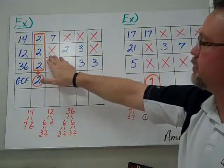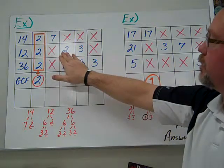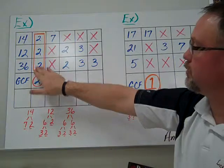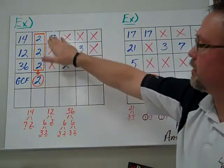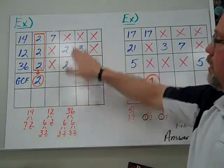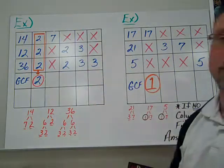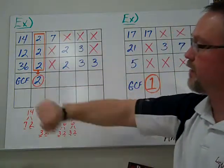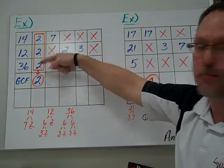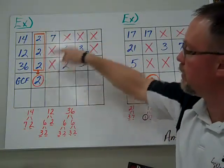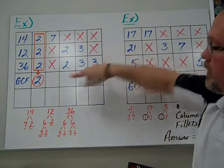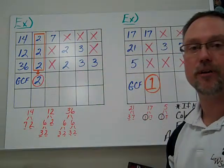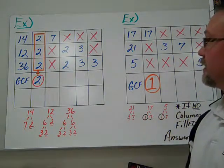For 36, we had a 2 here, nothing here because there's no other 7. A 2, a 3, and another 3, so we had to add another column to it. Again, we're finding the greatest common factor, so it has to be the column that's filled. When you bring that value down, if there's no other ones that are filled completely, that becomes your greatest common factor. So it's an easy way to figure out what your greatest common factor is.